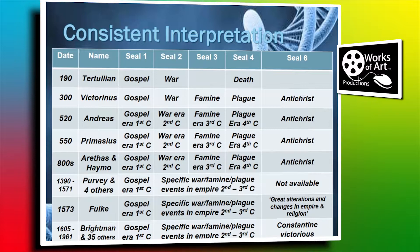When we come to Andreas we then start having some precision about the interpretation. It's the gospel in the first century, the war era in the second century, third century of famine, fourth century of plague. So they're getting very precise as to what they see, and it's not that far away from when they are. As for seal six, they're not quite sure about it. They say it's Antichrist, and we know from the scriptures that Antichrist is that which is against the gospel, a corruption of the truth. So they're seeing in seal six something that's corrupting the truth.